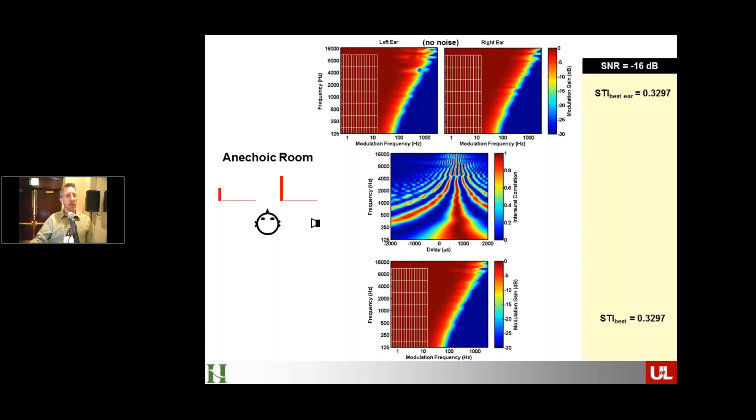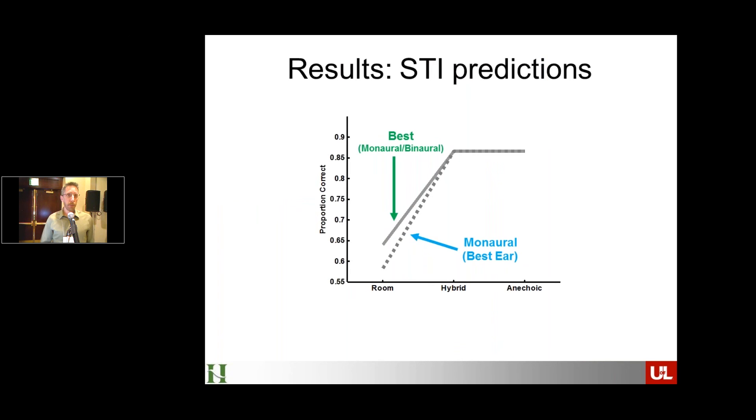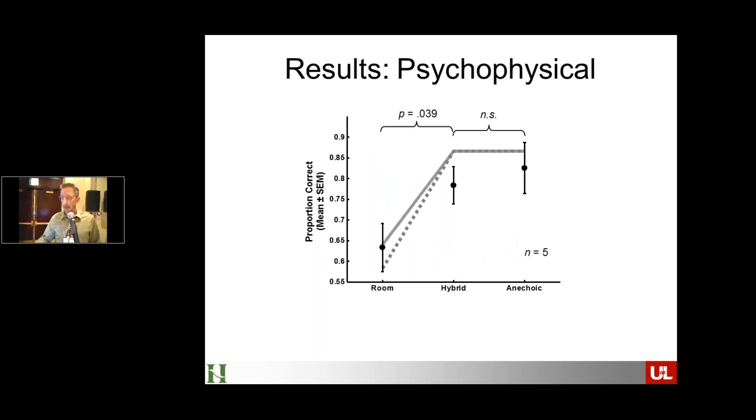So now what we can do is we can take these STI numbers and do some conversion to make predictions about what we expect to see in terms of intelligibility with that task. And that's what we have here. So basically the predictions say that we should see lower intelligibility in the room and then higher intelligibility in both the hybrid and the anechoic. And those should be equally intelligible because they both have the same better ear. And some psychophysical data from five listeners shows that we pretty much captured that trend in the data. Pretty much.